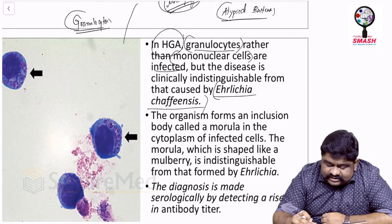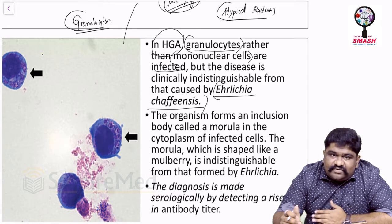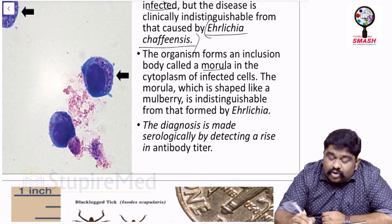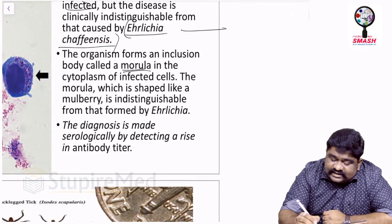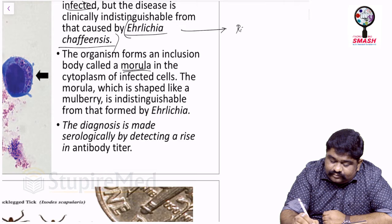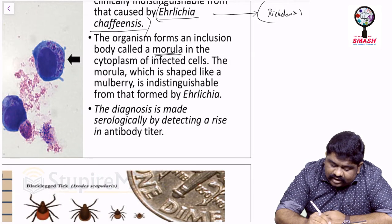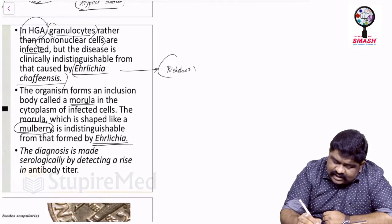Ehrlichia chaffeensis is known for causing ehrlichiosis. The organism forms an inclusion body called a morula, shaped like a mulberry. Ehrlichia is a type of Rickettsia, and the morula found in Anaplasma phagocytophilum is indistinguishable from that found in Ehrlichia.